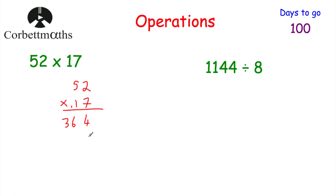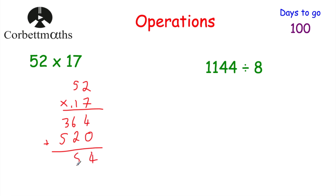Because we're multiplying by 10, we put a 0 down first. Then 1 times 2 is 2 and 1 times 5 is 5, so 52 multiplied by 10 is 520. Now we add 364 and 520 together: 4 plus 0 is 4, 6 plus 2 is 8, 3 plus 5 is 8. So 52 multiplied by 17 is equal to 884.